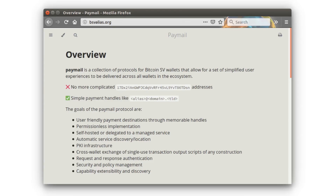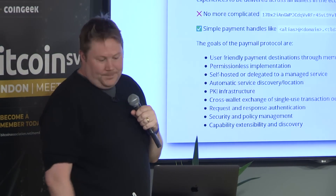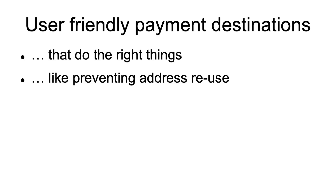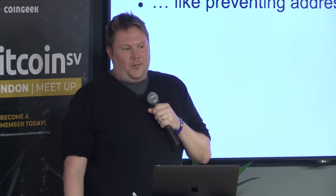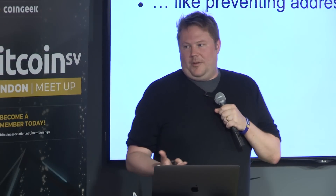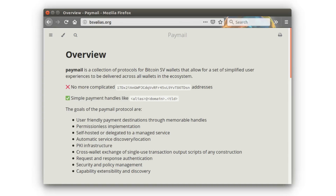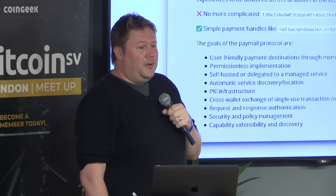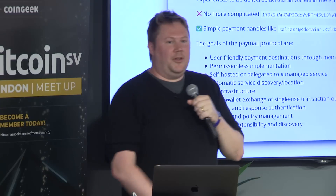We put this back online about a week ago — there's a screenshot of it. I'm going to walk through these goals one at a time. User-friendly payment destinations that do the right thing, like preventing address reuse. We should all know that one of the privacy techniques is to never reuse an address. An address is just a form of encoding an output script, and by far the most common output script is Pay2PublicKeyHash. Even copying and pasting a full address is a bit hairy if you miss a character.